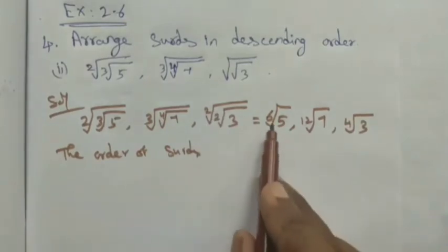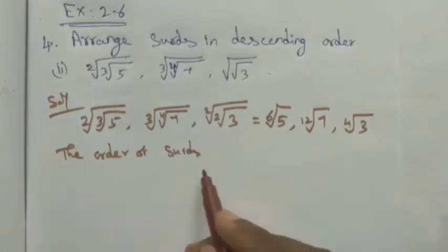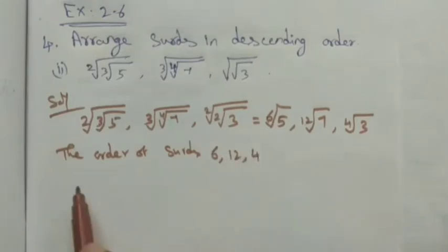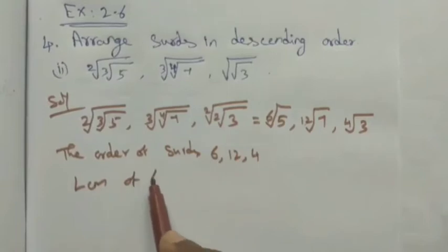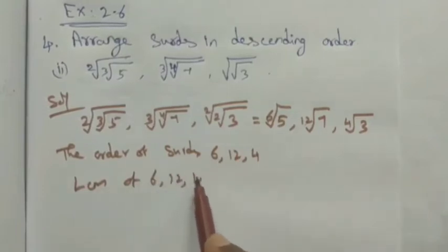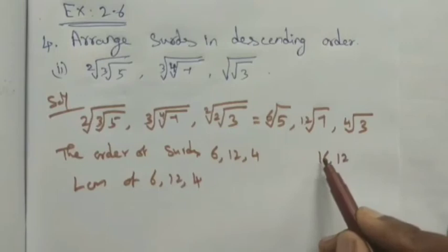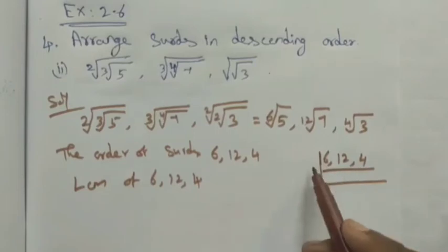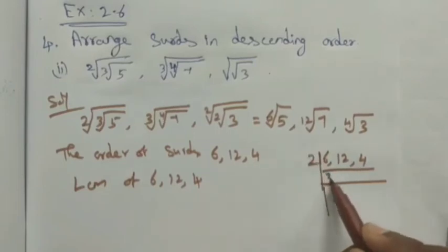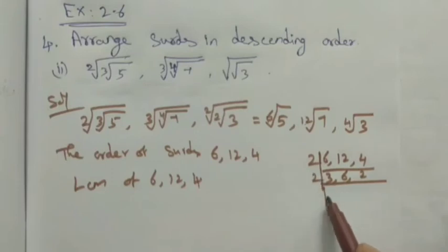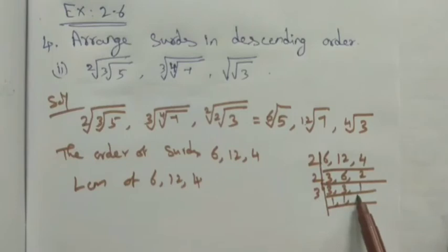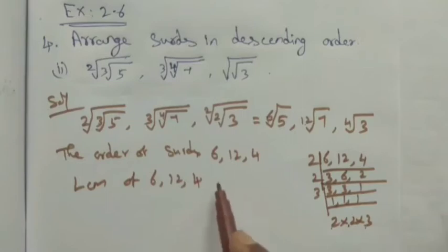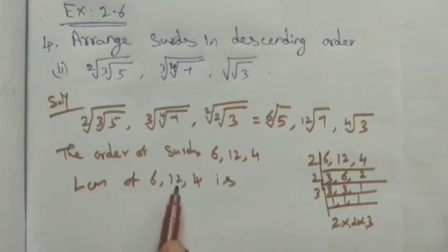The orders of the surds are 6, 12, and 4. We want to find the LCM of 6, 12, and 4. Divide by 2: we get 3, 6, 2. Divide by 2 again: 3, 3, 1. Divide by 3: 1, 1, 1. So 2 × 2 × 3 = 12. The LCM of 6, 12, and 4 is 12.